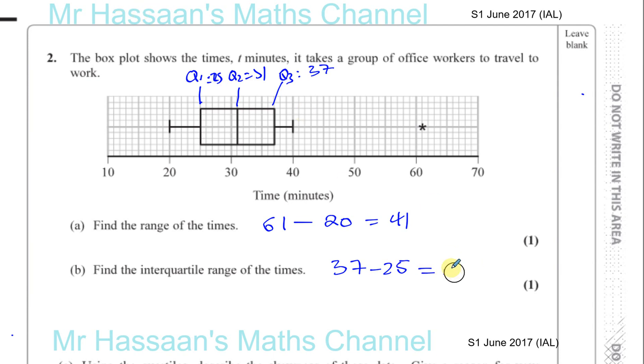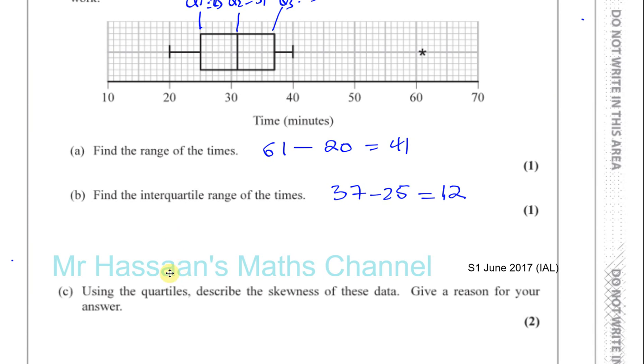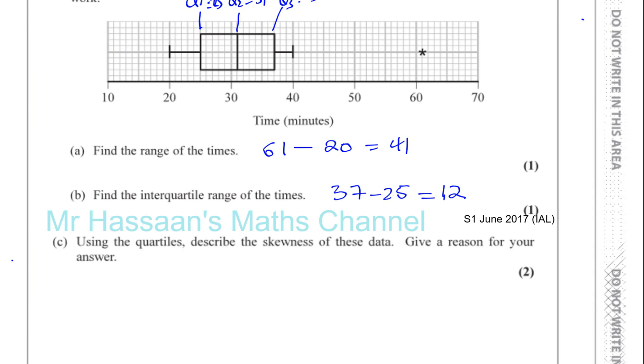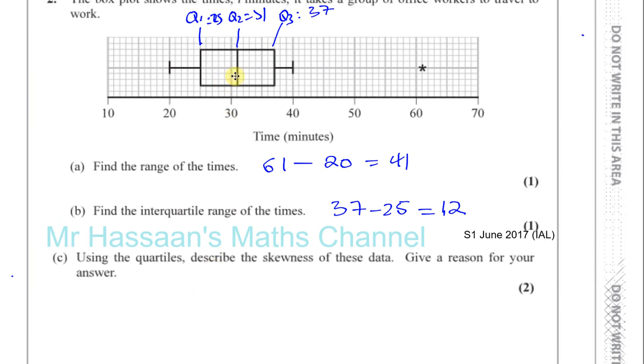The next part of the question is asking us to describe the skewness of the data using the quartiles. So what we can see is the position of the median in relation to the lower quartile and the upper quartile helps us determine the skewness of the data. If the median is closer to Q1, then it has positive skew. If the median is closer to Q3, then it has negative skew. If it's in the middle, then there's no skew. And you can see here it looks like it's symmetrical because it looks right in the middle.